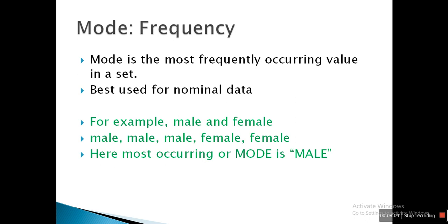Now let's discuss mode. Mode is used to find the frequency — the most frequently occurring value in a set of values is called the modal value. For example, in a survey where respondents are either male or female, if there are five responses — three male and two female — the modal value is male, since it occurs most frequently. That is how we identify the modal value in a list.